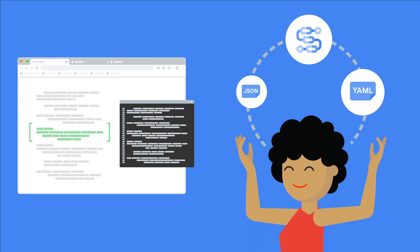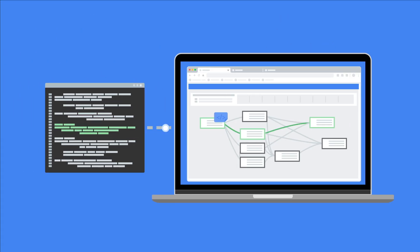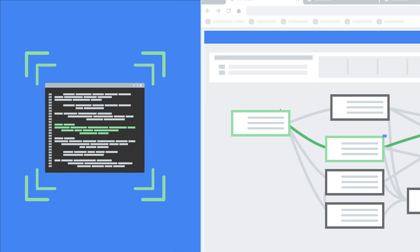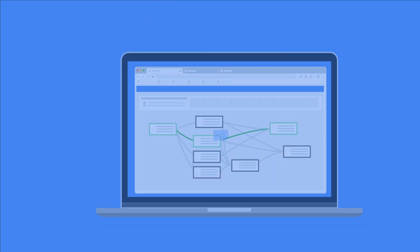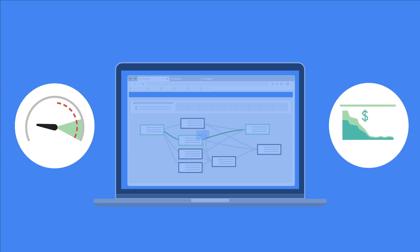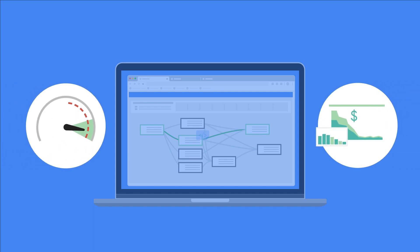Getting started is easy. Using the console or the command line, you can define your workflow as a simple YAML or JSON file to spell out which services and APIs you want to include. Each service can also pass information to the next, letting you build custom workflows that match the business logic you need. And since it's all serverless, you only pay for what you need, scaling down to zero during slow times.